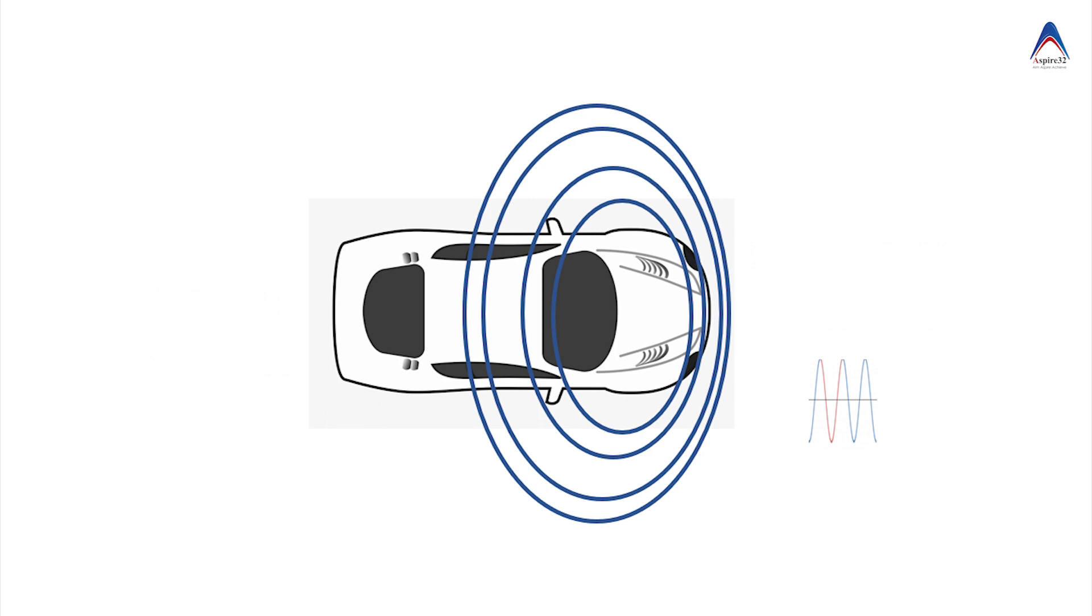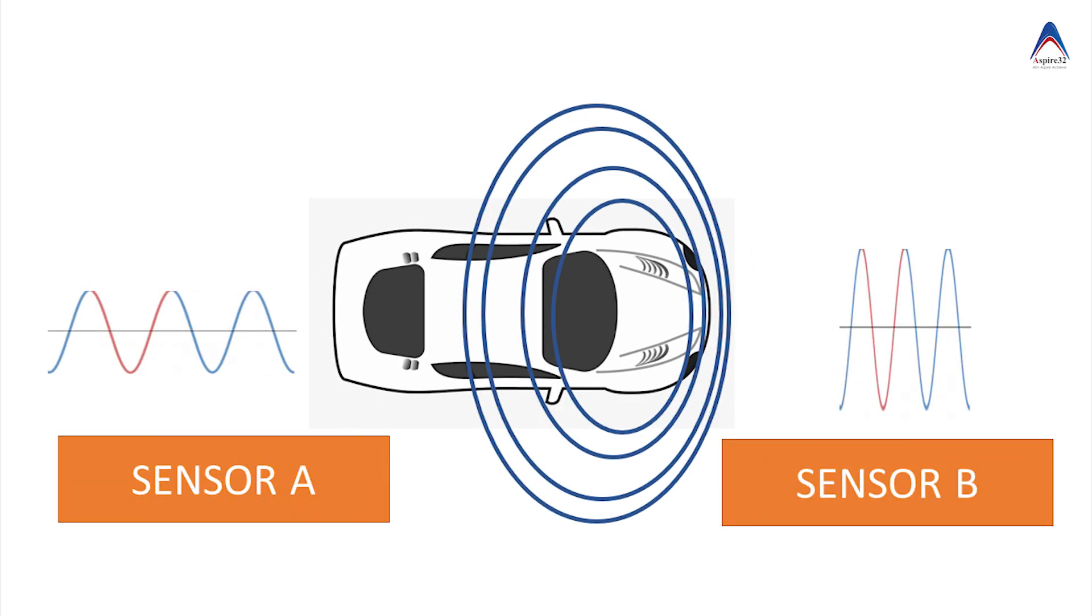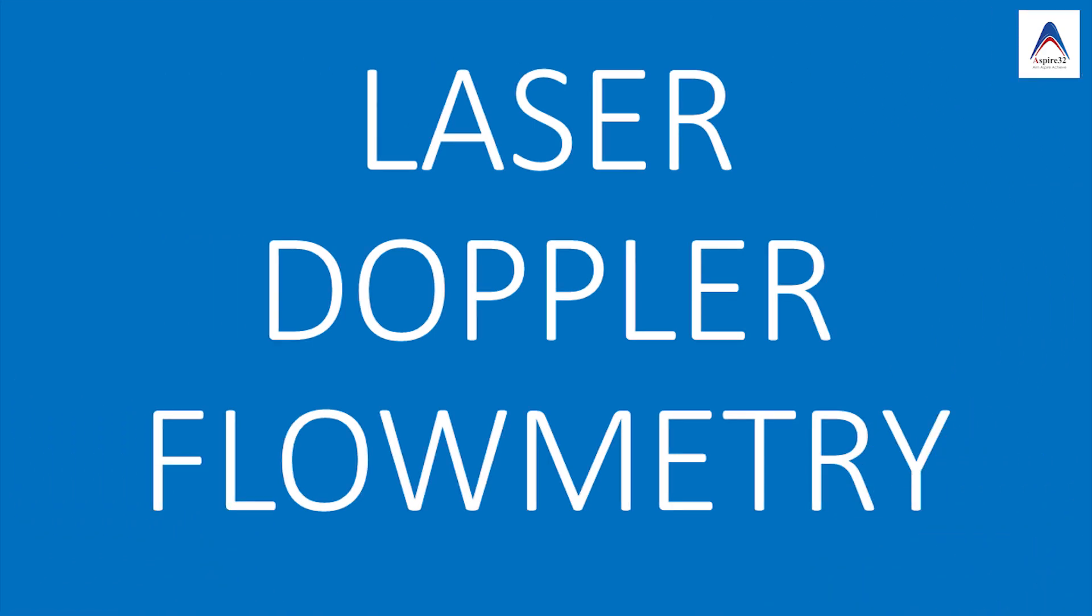Suppose if the car is moving while honking the horn, then when you check the frequency of the recorded sound in the sensor B, then it will be a higher frequency because it is nearer to the car, whereas the sensor A, the frequency will be less because it is away from the honking car, and this is called as Doppler shift.